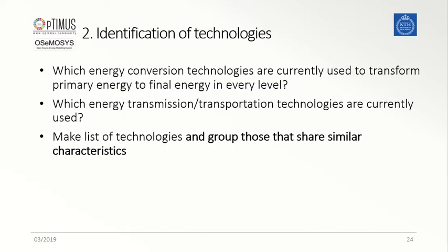To identify the technologies that are involved in our system — to convert primary energy commodities into secondary ones, or to transmit and distribute them along the system — it is important to list them based on a wide set of data sources that can provide such information, for instance government reports, power plants databases, technical reports, and publications by intergovernmental organizations.